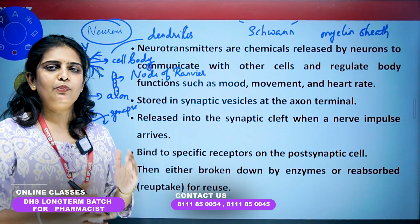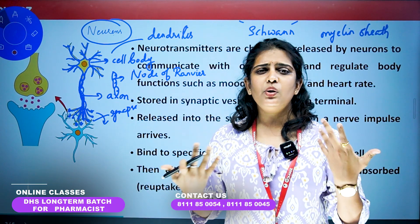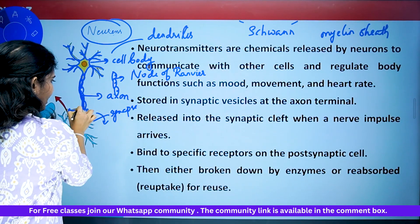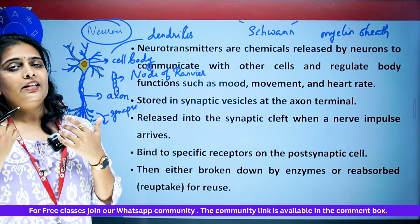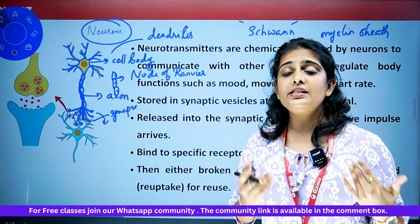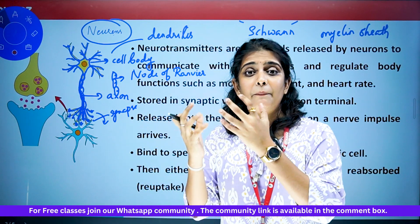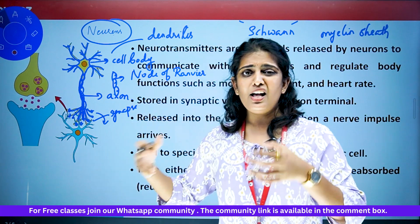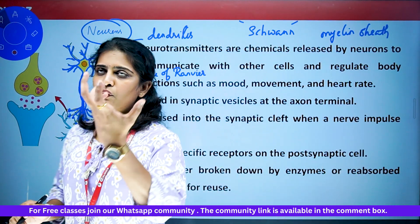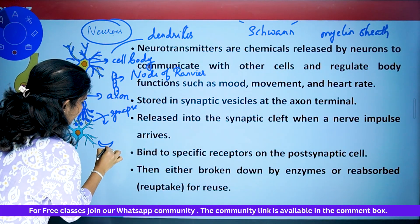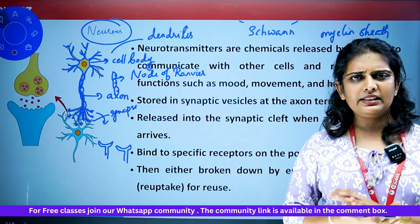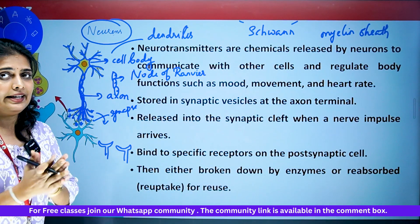Neurons communicate to regulate body functions and emotions. At the axon terminal — the end of the neuron — there are synaptic vesicles. These vesicles are released into the synaptic cleft when an impulse arrives. When the neuron receives a particular impulse, the synaptic vesicles release the neurotransmitters into the synaptic cleft, and the process continues from there.